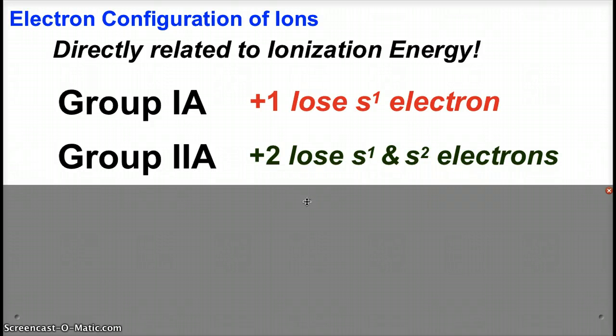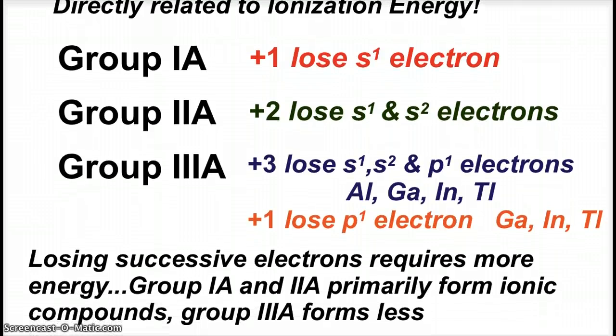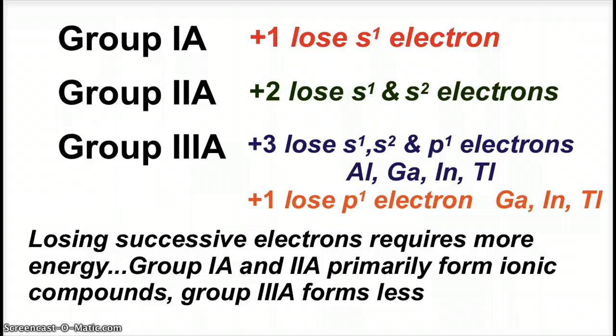Group three, which houses aluminum, gallium, indium, and thallium, will typically form plus three ions by losing the two s's and the p. But the larger atoms like gallium, indium, and thallium can also just lose the p electron and form plus one ions. Losing successive electrons requires more energy. Groups one and two primarily form ionic compounds. Group three forms less.